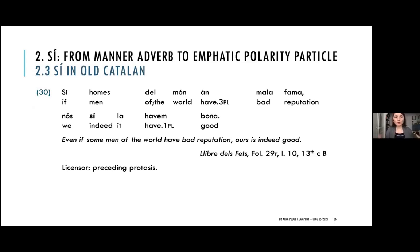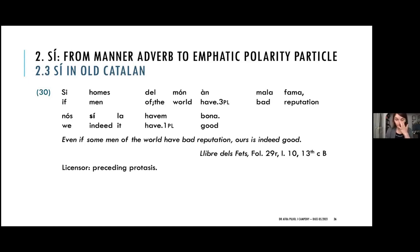Here we have an example: a non-veridical context — the protasis 'si omes del mon an mala fama' (if there are men in the world that have bad reputation) — elicits a reading that the person being addressed must have bad reputation. To cancel that possible reading, the speaker uses SI emphatically, saying that it is indeed the case that they have good reputation even if other people have bad reputation. If you want to know more about this, you can read Pujol and Puig 2019.